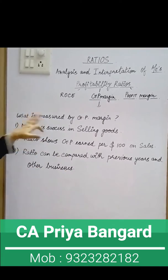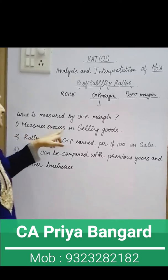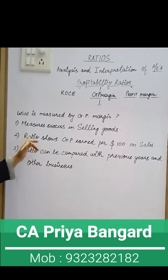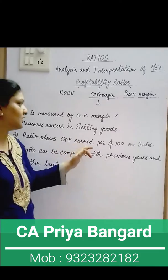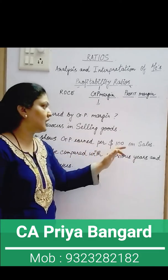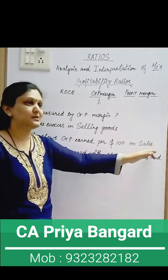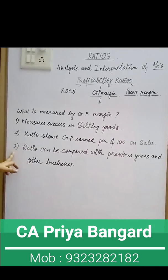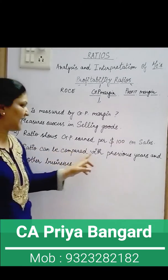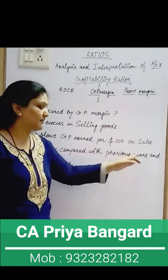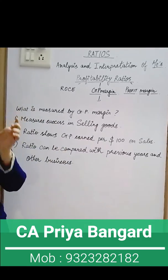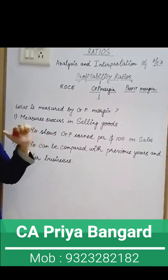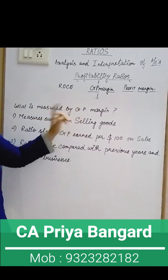So what you measure is success in selling goods. The second point: this ratio shows GP earned per dollar or hundred on sales. Point number three: the ratio can be compared with the previous year — for example, what was my GP in 2019 compared to 2020.